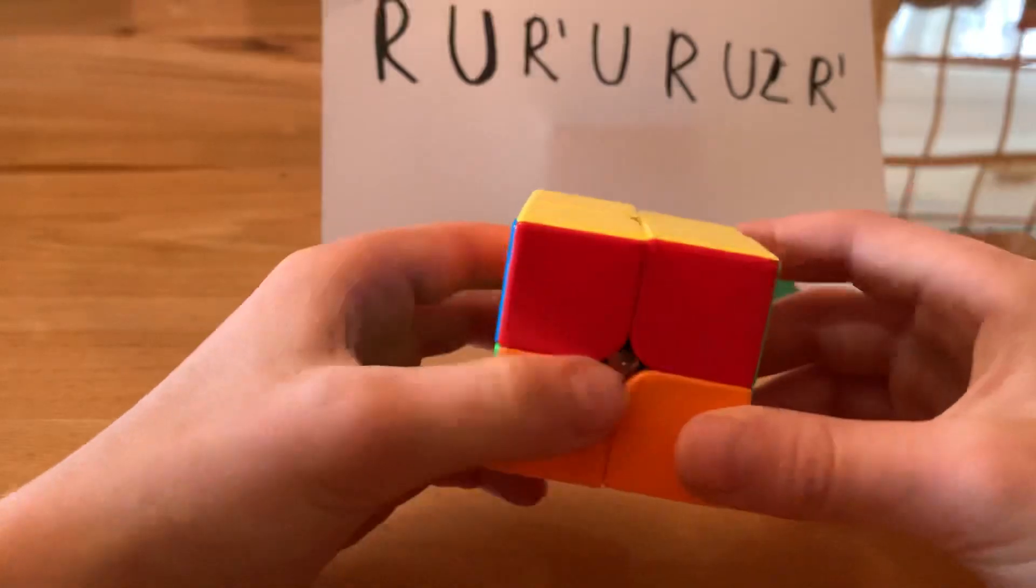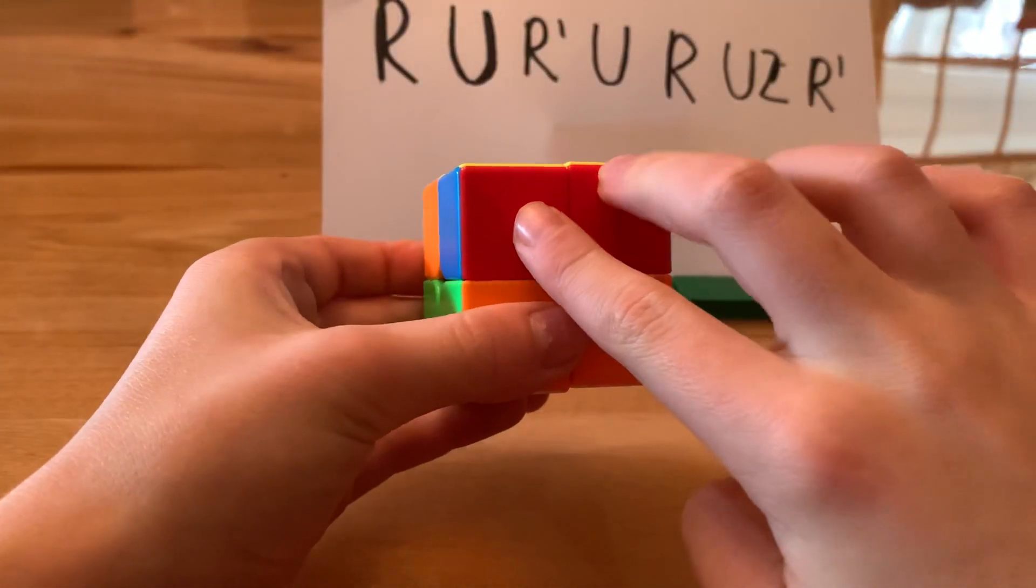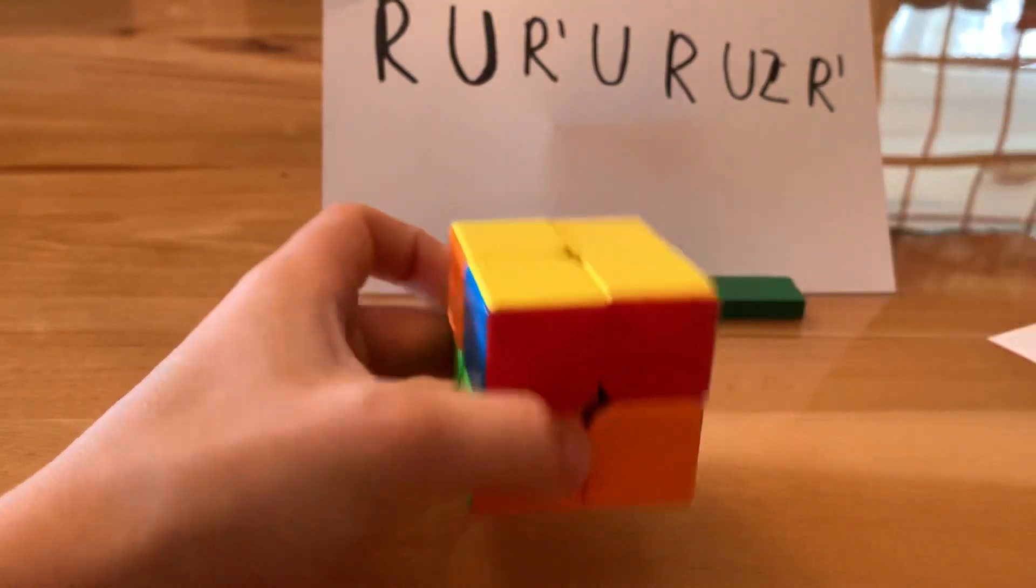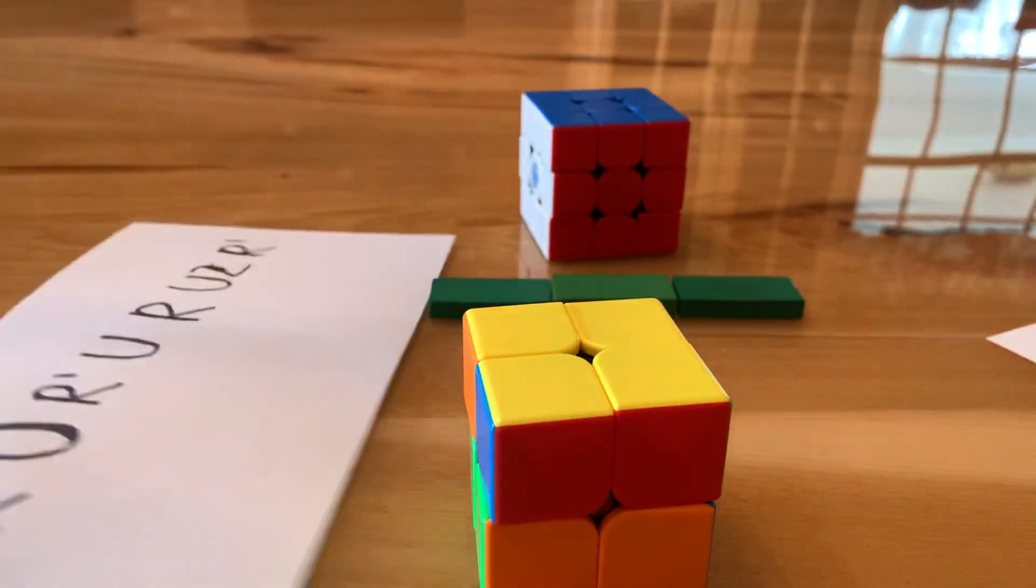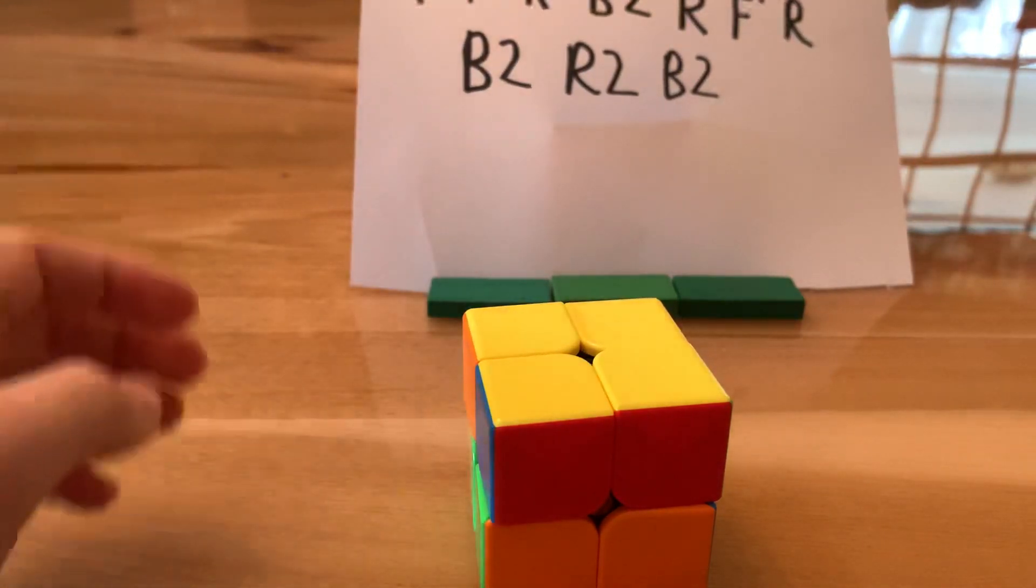So now what you do is you look for a pair in this top layer. See, I have red. And if you don't have a pair, that's fine. Just do the following algorithm, and then you should have a pair, so then do it again.